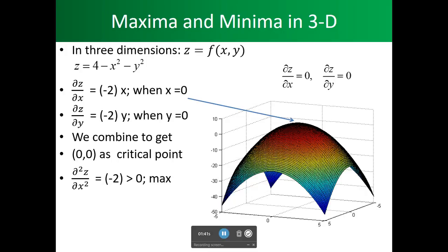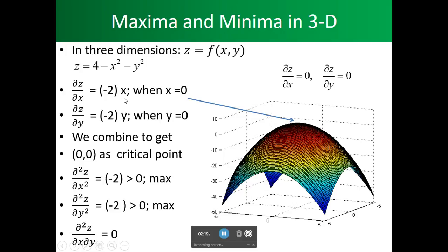Now we take the second derivative to find out if it's positive or negative. If we take the second derivative with respect to x, we find it's negative 2, which is less than zero. The same thing for the second partial with respect to y — we get minus 2. Both of these indicate maximums, but we still have to do further tests to verify. When we take the mixed partial with respect to x and then y, we get zero.